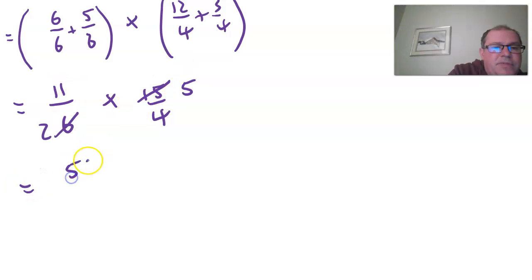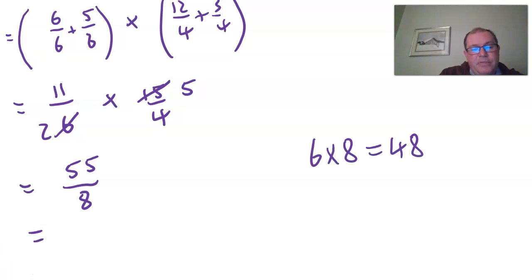So eleven times five is fifty five divided by two times four is eight. And I'm left with fifty five divided by eight. So how many times does eight go into fifty five? Well have a think about that. This is where your times tables are so useful. Six times eight is forty eight. So it goes in six times and you can see the remainder is seven. Forty eight up to fifty five is seven. Still needs to be divided by the eight.